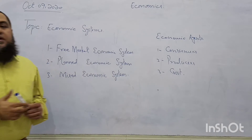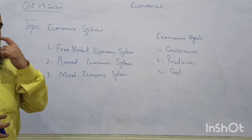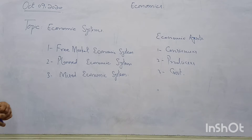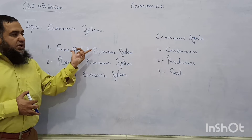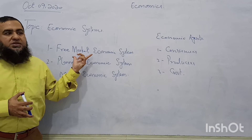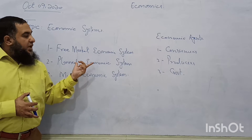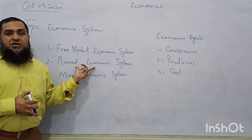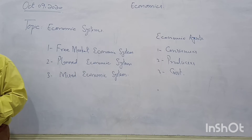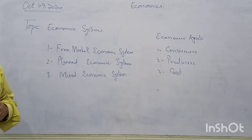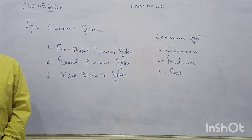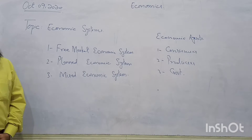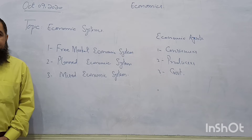When these economic agents work with each other and work together, they follow one of the economic systems. There are different economic systems: one is called the free market economic system, another is called the planned economic system, and the last one is called the mixed economic system. When they work with each other, they answer the basic economic questions: what to produce, how to produce, and for whom to produce.